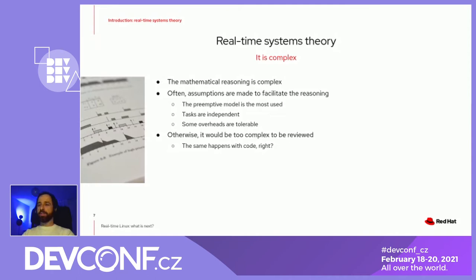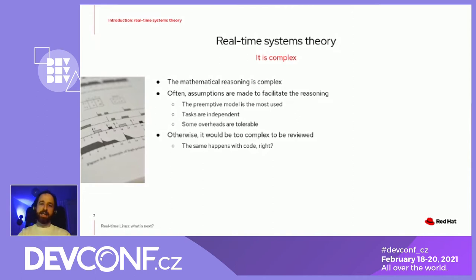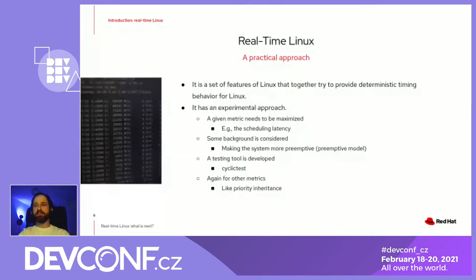On the other corner we have Linux, which has a more practical approach. Real-time Linux is not a single thing, but a set of features that tries to provide more deterministic behavior. The approach works more like: we have a metric to be maximized — for example, we have the scheduling latency.